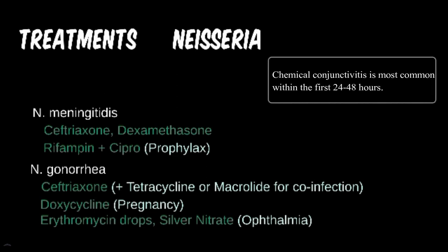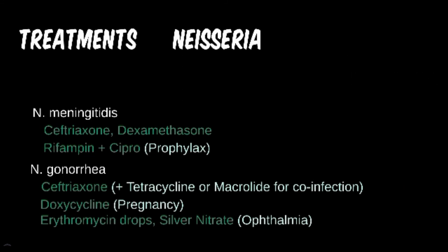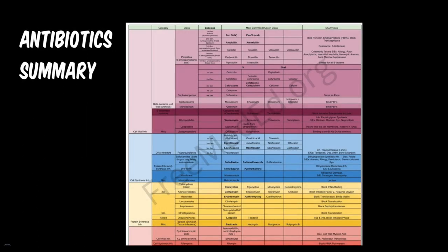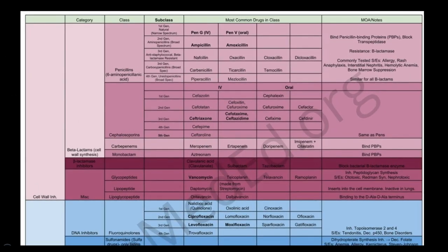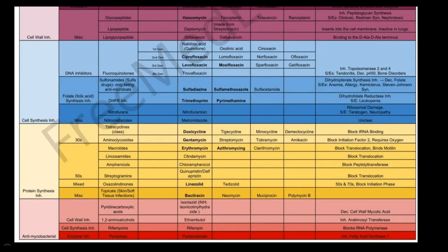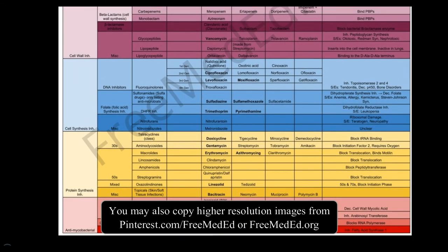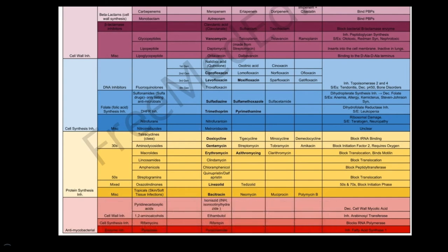We have covered the majority of common antibiotic classes at this point, and we'll save the antituberculosis medications for that section. Here's a brief chart of the most popular drugs in each category. It is not exhaustive, as there are always medications being created, tested out, and faded out, but this list has been relatively stable over the past several years. Feel free to screenshot it for studying or write them down in your notes. We will cover more specifics about each drug class, the drugs that fall under each class, and their side effects in a later module.